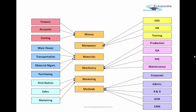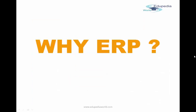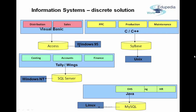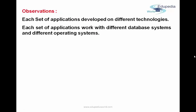There are many departments in an organization, each handling different resources, and ERP software is very much linked to running this business. To understand why we need ERP, consider a scenario where each department uses a different software — HR runs on Java, finance on Tally, maintenance on C++, and sales and distribution on Visual Basic. While each department runs fine individually, a major problem arises when integration is needed.